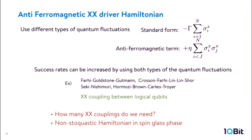So far I talked about nested quantum annealing in the stochastic case, where the driver Hamiltonian was just X. Now I want to consider an XX term. The motivation is that several works suggest that using a non-stochastic Hamiltonian can sometimes increase the success rate. I want to study this in the context of nested quantum annealing correction. The first question I want to ask is: in prior work, XX coupling was placed between logical qubits, but for a large problem you would need many such couplings. Do we need all this XX coupling to get the benefit of non-stochasticity?